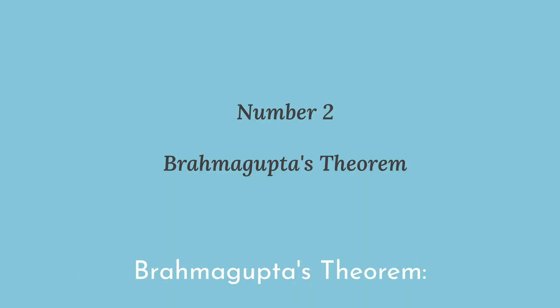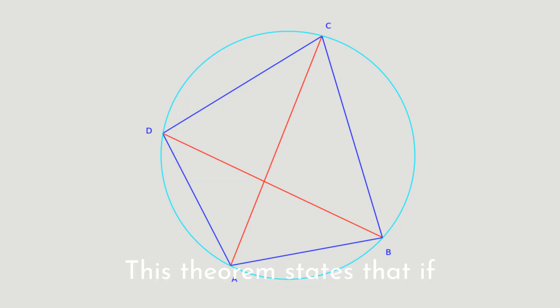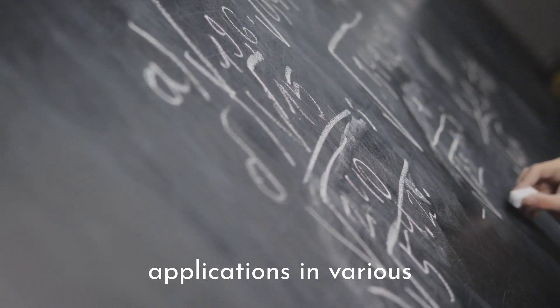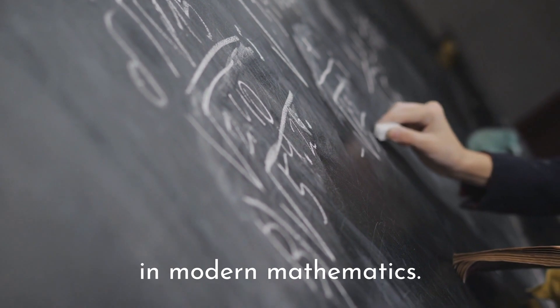Number 2. Brahmagupta's theorem. He contributed to geometry by providing a theorem related to cyclic quadrilaterals. This theorem states that if a cyclic quadrilateral has perpendicular diagonals, then the perpendicular drawn from the point where the diagonals intersect to any side bisects the opposite side. This theorem has practical applications in various geometric problems and continues to be studied in modern mathematics.